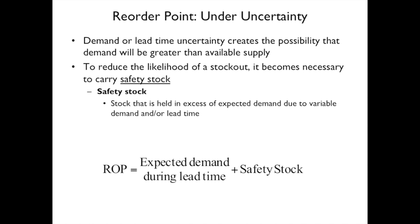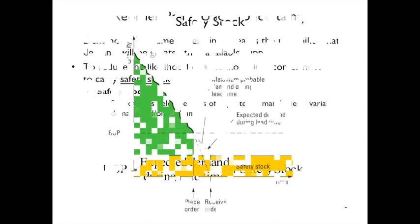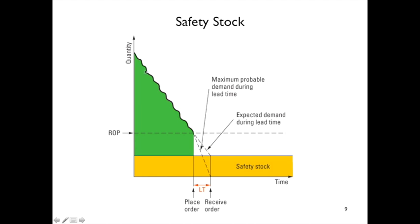Your reorder point with safety stock equals expected demand during lead time plus your safety stock. Graphically, your inventory is declining, you hit the reorder point, and then the maximum probable demand during lead time defines your safety stock. If lead time itself is variable, you also need safety stock to cover that variability.